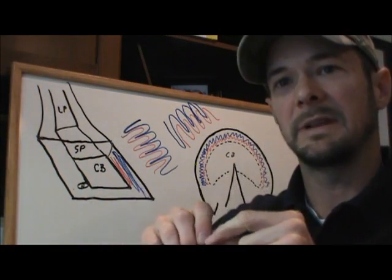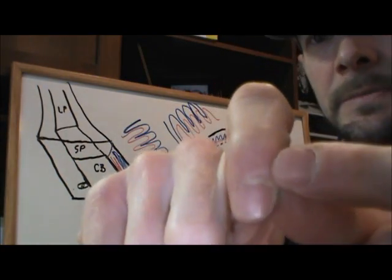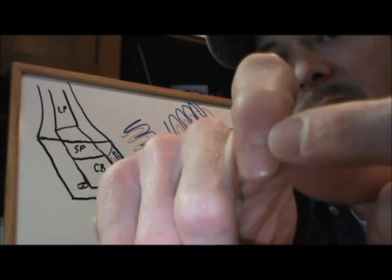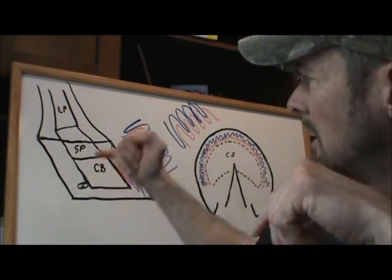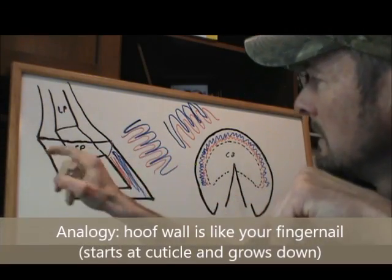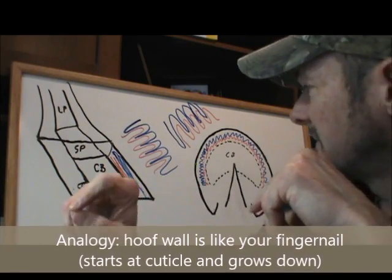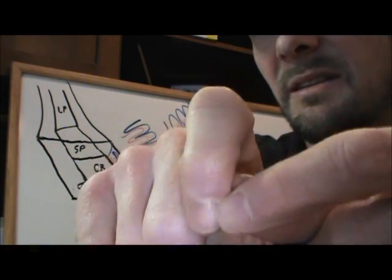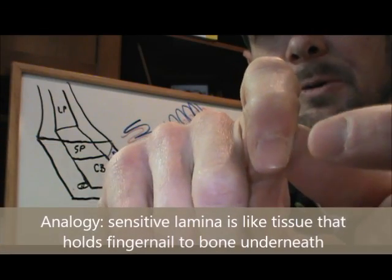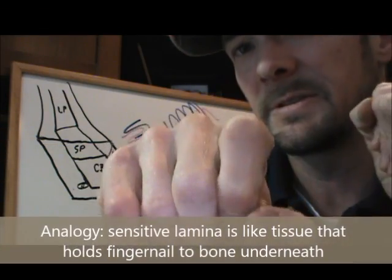Easy comparative anatomy reference is your nail and the nail bed. All of your fingernails produced at your cuticle and grows down. All hoof wall is produced here and grows down. The sensitive lamina functions, for purposes of this discussion, a lot like the nail bed in that it holds your fingernail to yourself, to your finger.